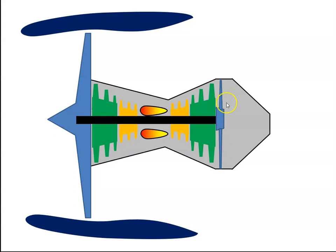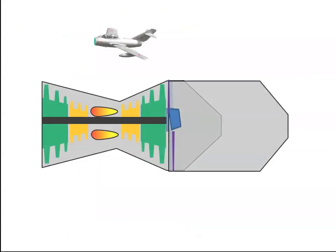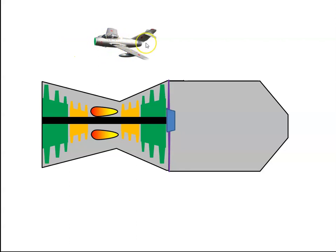There are various components of the exhaust system and to look at them we will consider a pure turbojet. If we have an aircraft like the MiG-15 and assume that the engine is somewhere in here, we have the compressor, we have the combustion chamber, we have the turbine, and then the turbine finishes around here — we then have to get the gases from this location out to the nozzle at the end.